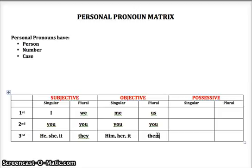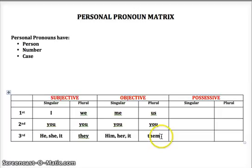If you notice something here, objective case pronouns seem to like the letter M — you have me, him, and them. I use that as a memory device to help discern between subjective and objective case pronouns. If I just remember that objective case pronouns use a lot of M's, then I know they are: me, you, him, her, it, us, you, and them.